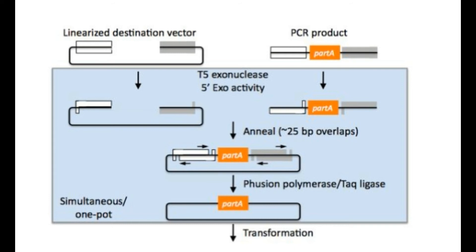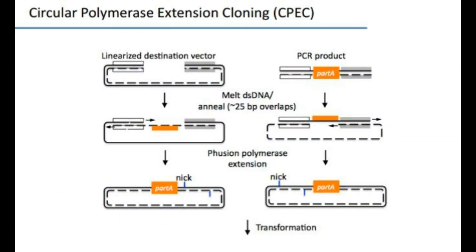The third technique is circular polymerase extension cloning, CPEC. Here the PCR reaction happens without primers. Denaturation and annealing of a mixture of vector and fragments gives a product with an extendable 3' OH end, and 25 nucleotide overlaps are needed. Only a few thermocycles are needed to get the final product, which reduces the number of mutations. Nicks are repaired after transformation of competent cells. The benefits are that no exonuclease activity is required, it is a one-step reaction, it is less expensive, and it has better reaction performance at elevated temperatures.